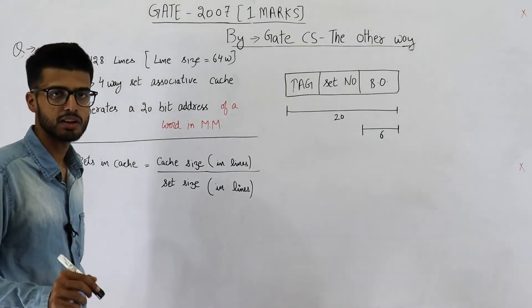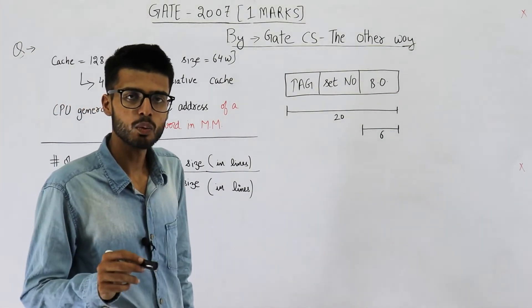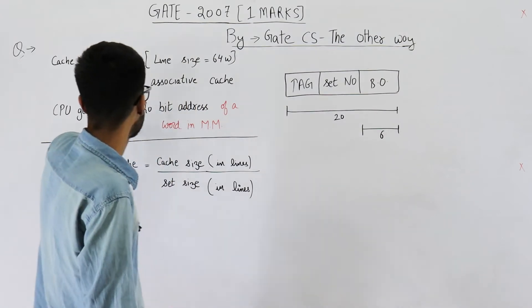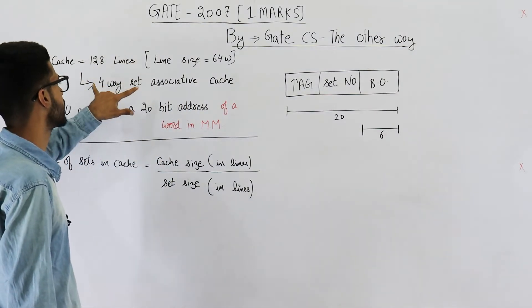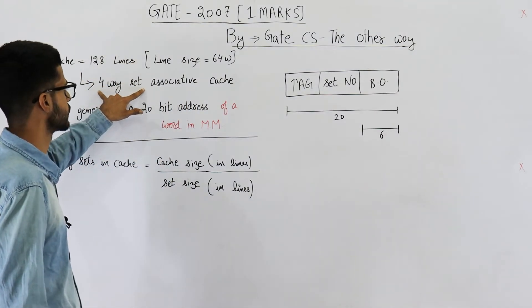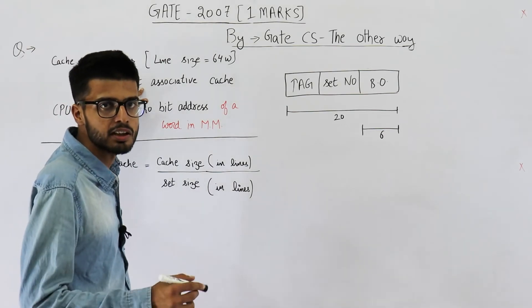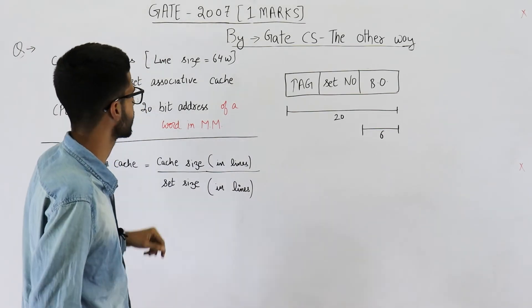That means the total number of sets will be 128 divided by 4. That is cache size divided by size of set in number of lines. Both are in number of lines.